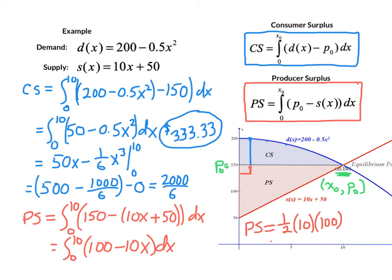And so our producer surplus, you can confirm this if you'd like to run the fundamental theorem on this, is $500. And so that's the overall benefit to the producers in this marketplace.